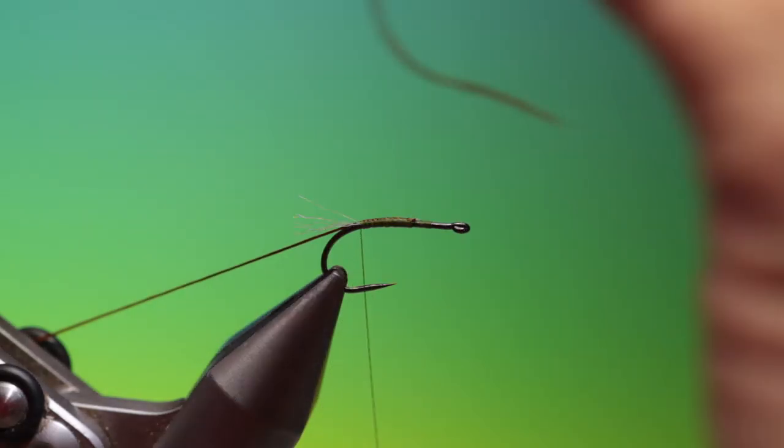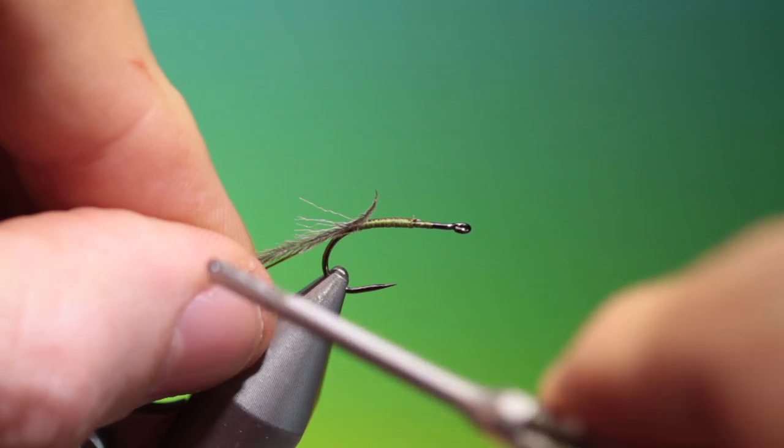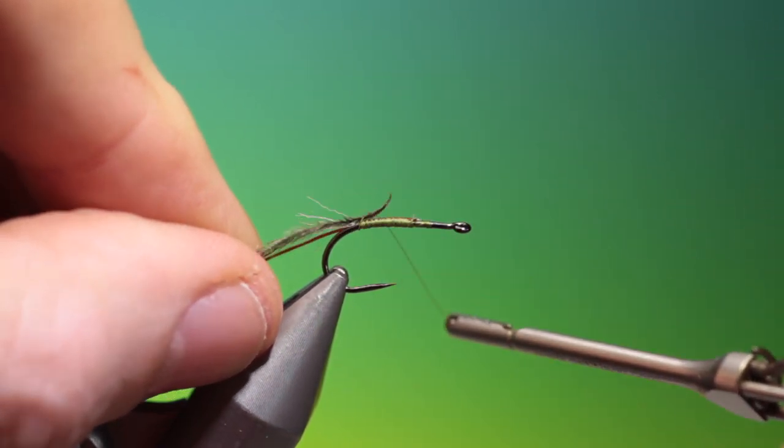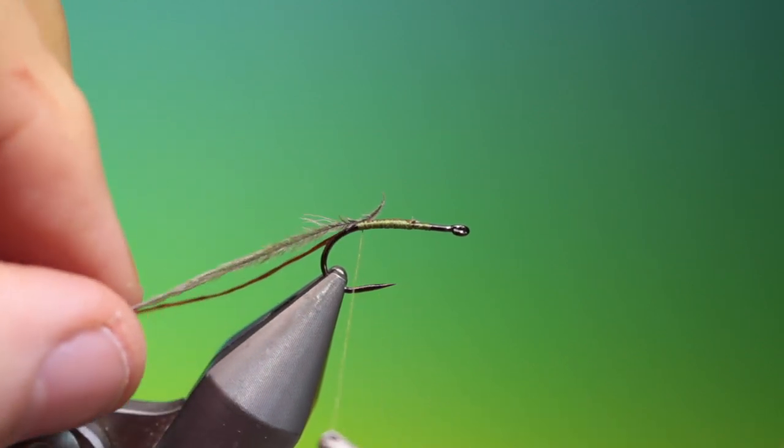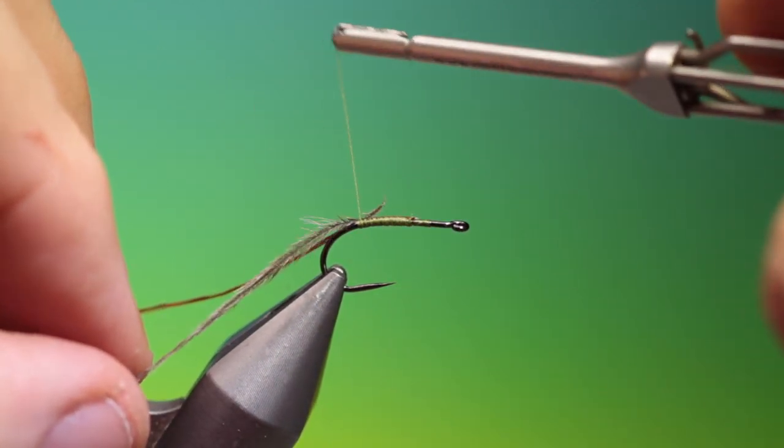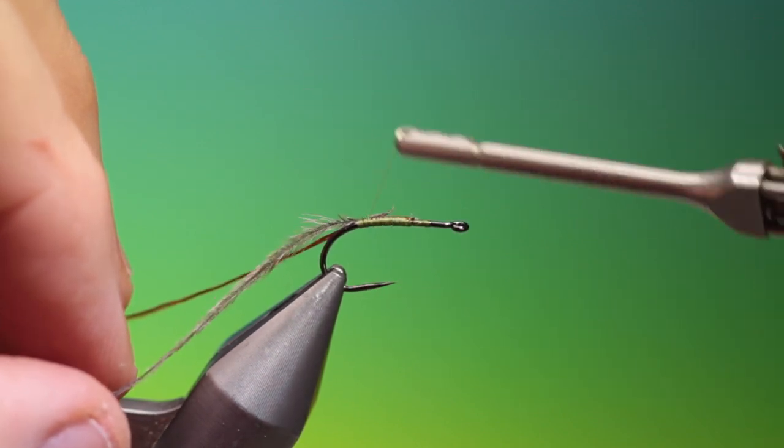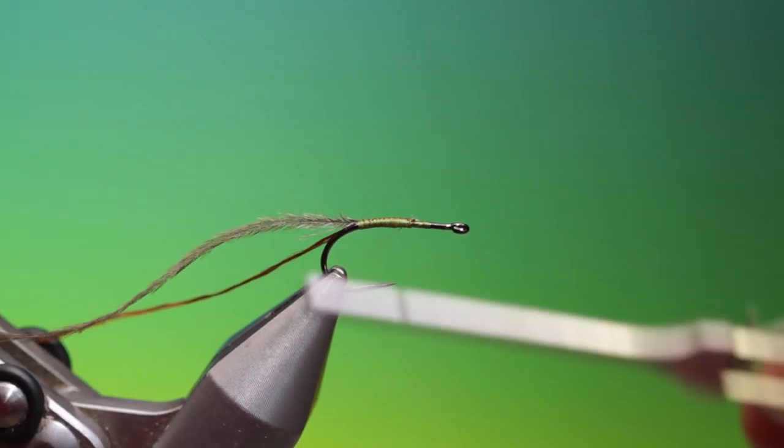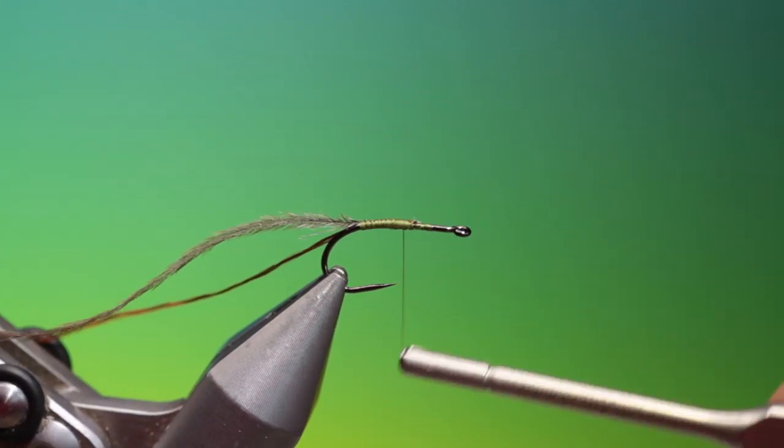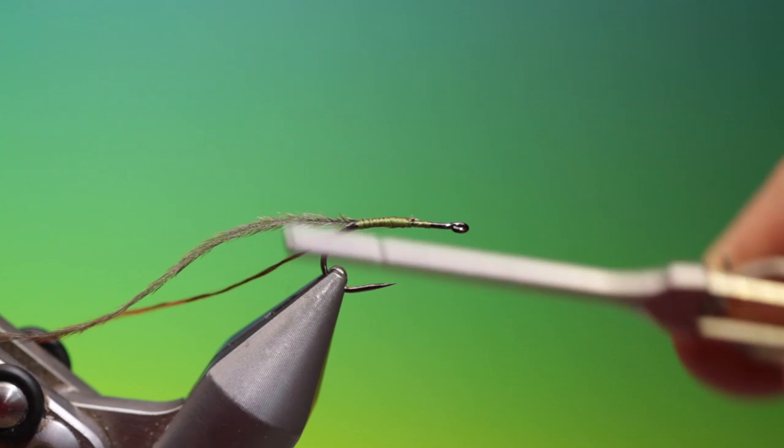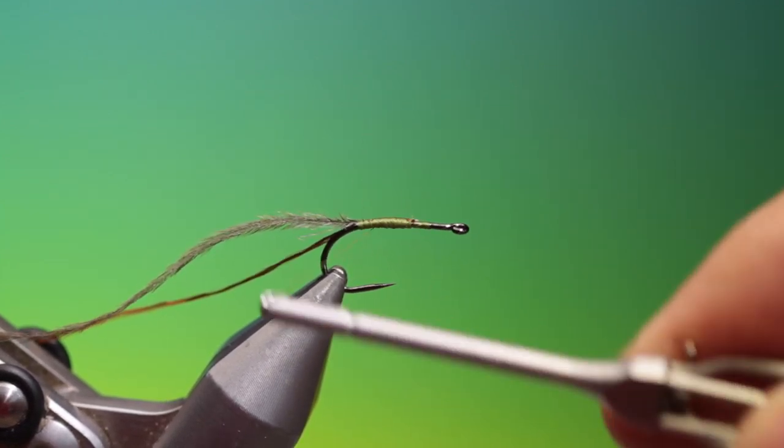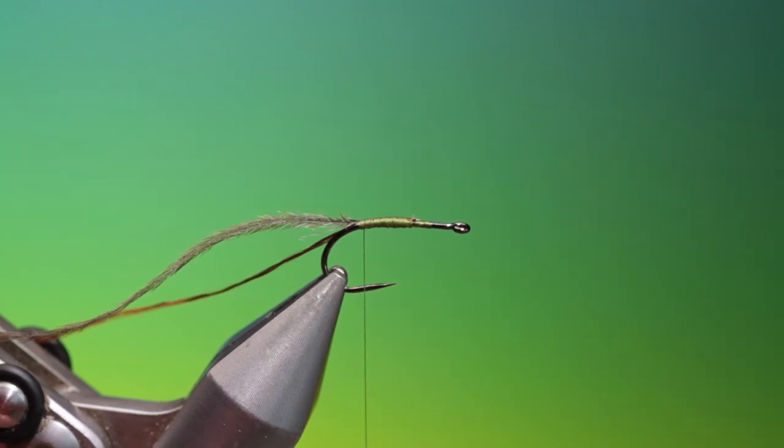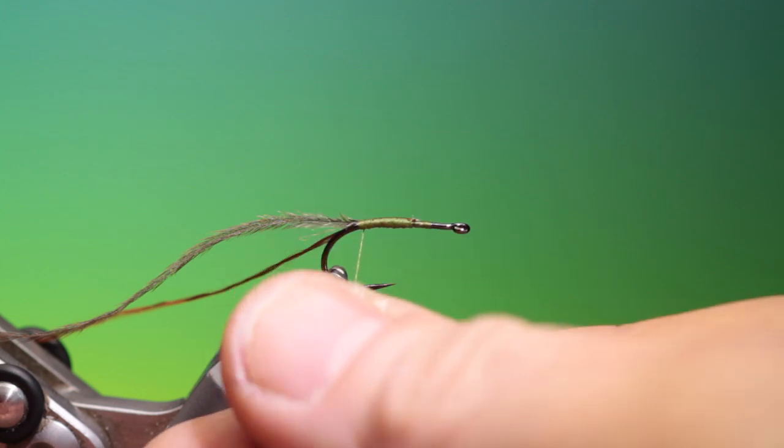What we need is a really fine natural ostrich curl. Just tack that in there and just broaden, put a little bit of a taper on that abdomen and go back to here.